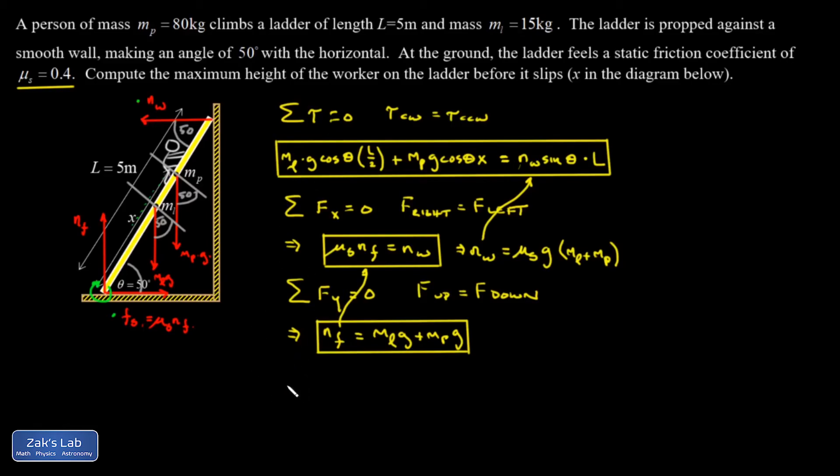So I'm going to go down to the bottom. And I get ML g cosine theta times L over 2 plus MP g cosine theta times X is equal to mu s g times the quantity ML plus MP times L.